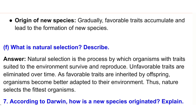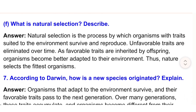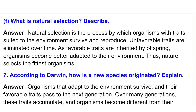F) What is natural selection? Answer: Natural selection is the process by which organisms with traits suited to the environment survive and reproduce. Unfavorable traits are eliminated over time as favorable traits are inherited by offspring. Organisms become better adapted to their environment; thus nature selects the fittest organisms.